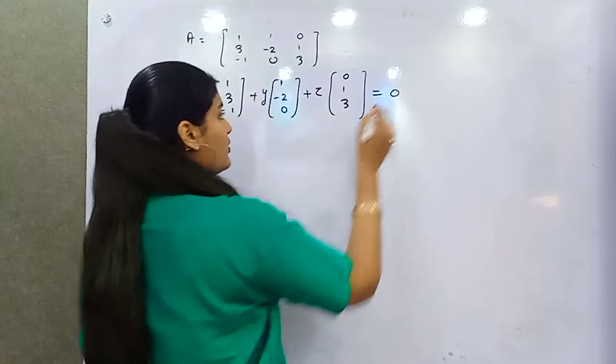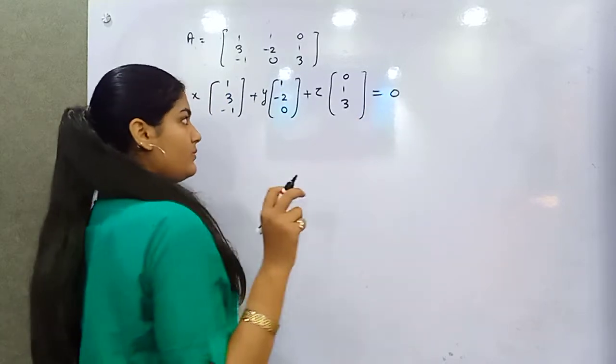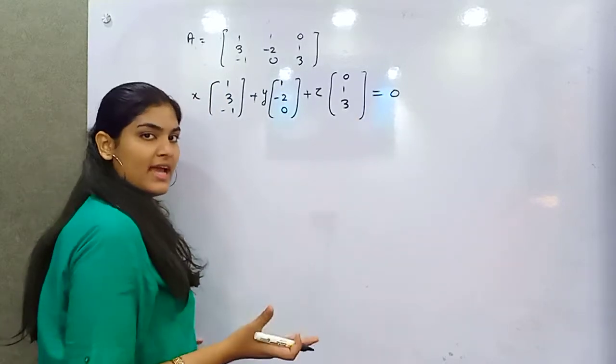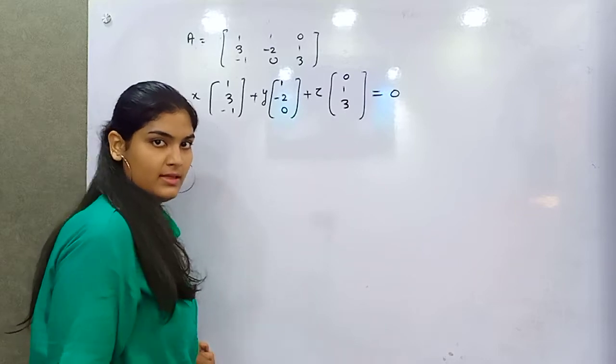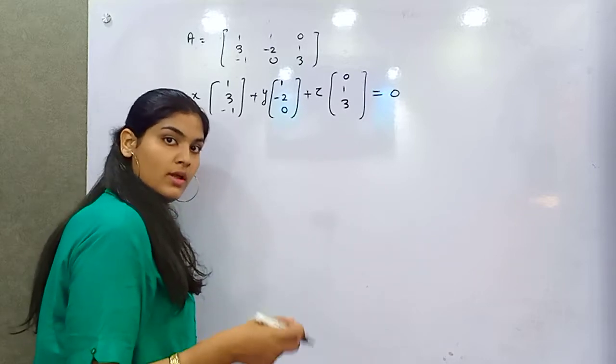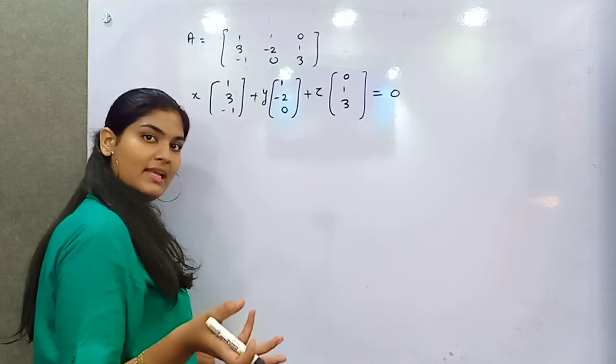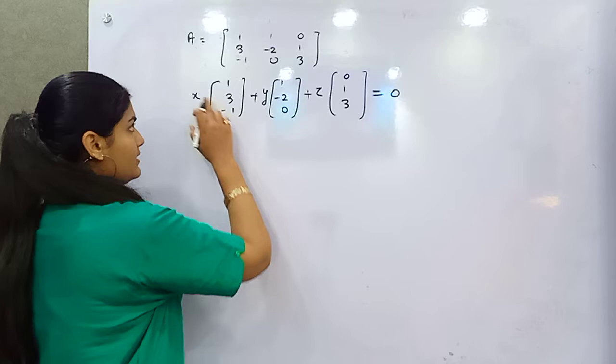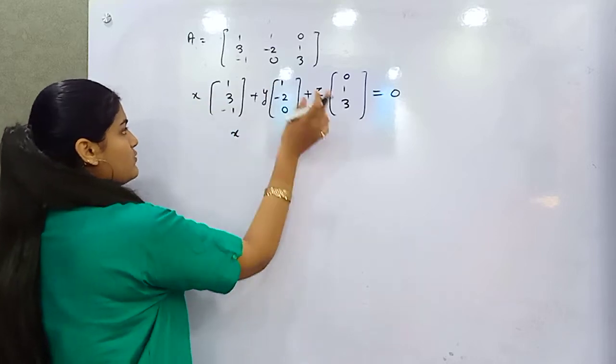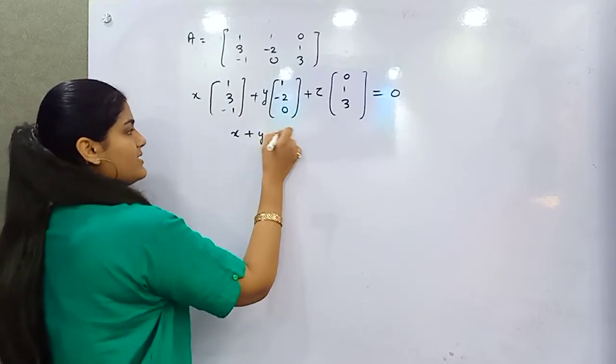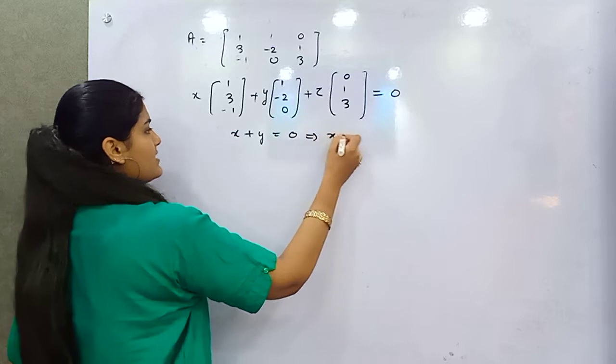Let's check it out whether we are getting X, Y, and Z as 0 or not. If we will get 0, then it means that matrix is linearly independent. Now it's easier for you to solve this. X plus Y plus 0Z is 0, so from here X is minus Y.